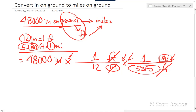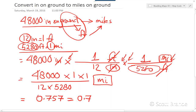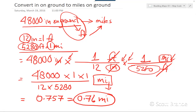The final calculation is to multiply everything in the numerator and divide by everything in the denominator: 48,000 times 1 times 1, divided by 12 times 5,280. Since all units cancel except miles in the numerator, using a calculator gives a decimal value of about 0.757, which rounds to 0.76 miles. So our hike along the Vulcan Trail is just over three-quarters of a mile, corresponding to two inches on the map.